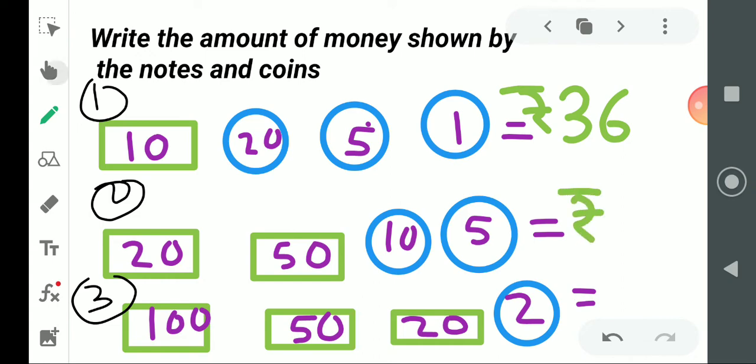Now next, what can we do? 20 plus 50 equals 70, 70 plus 10 equals 80, 80 plus 5 equals 85.